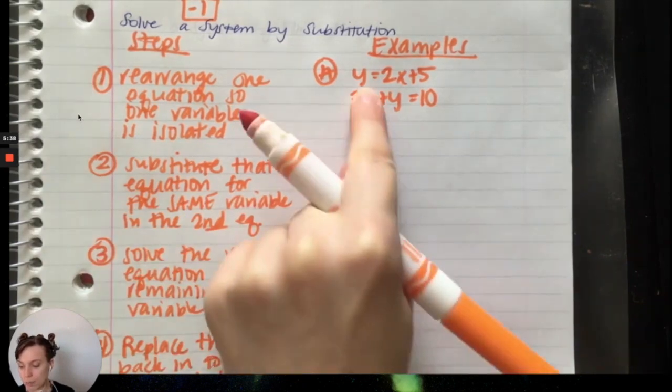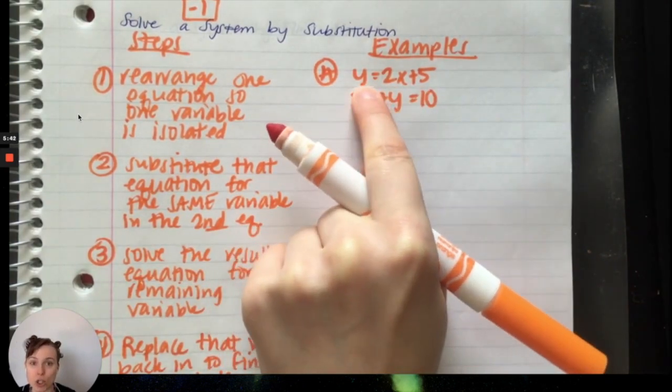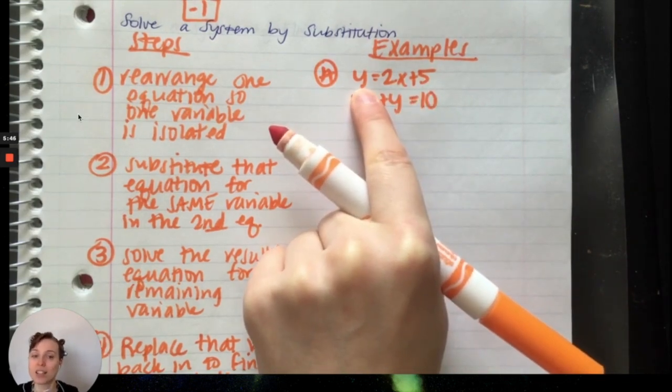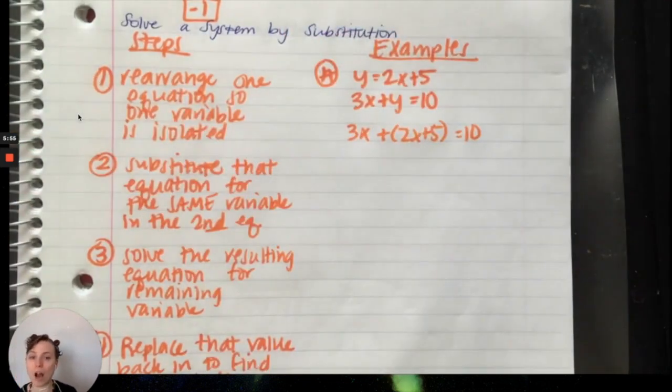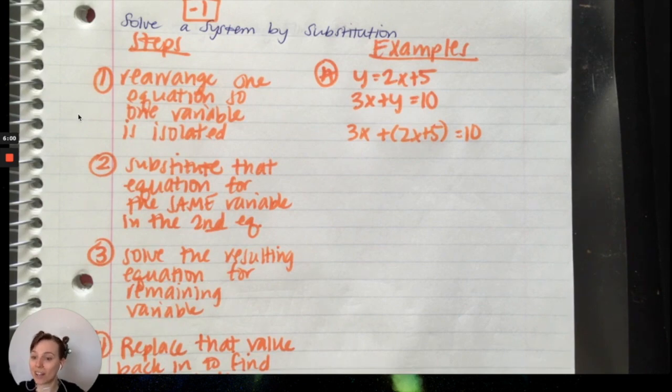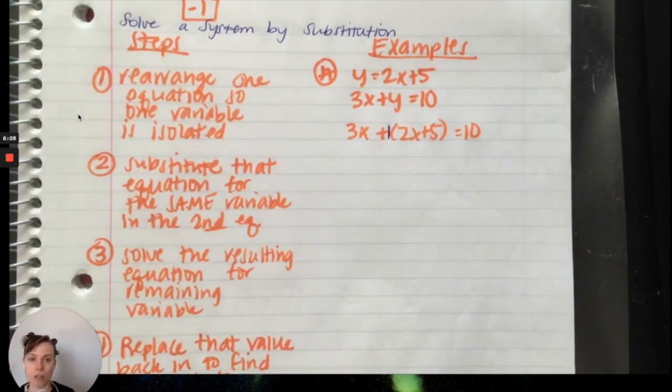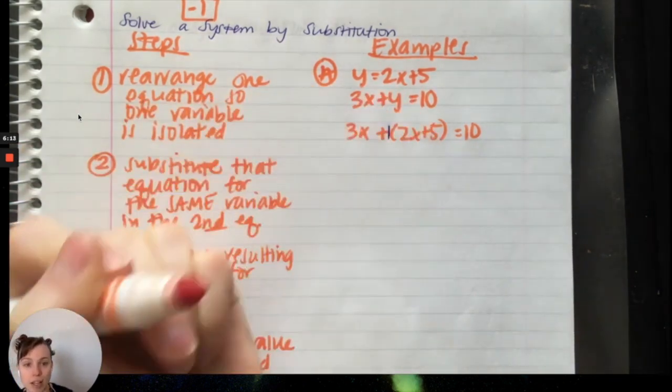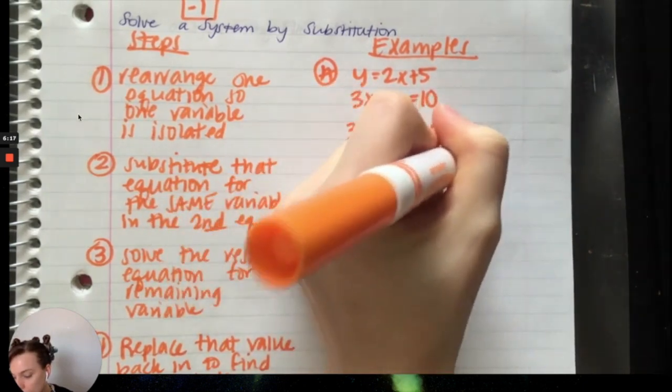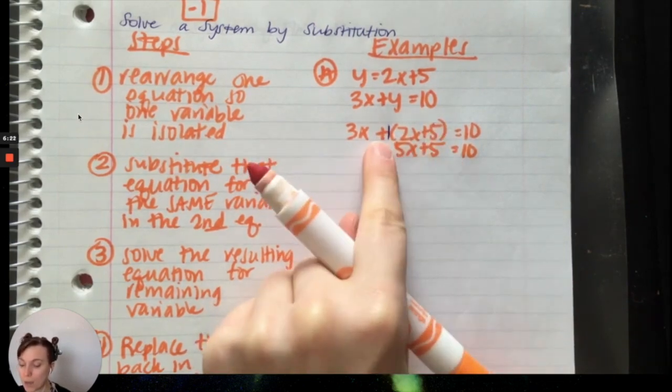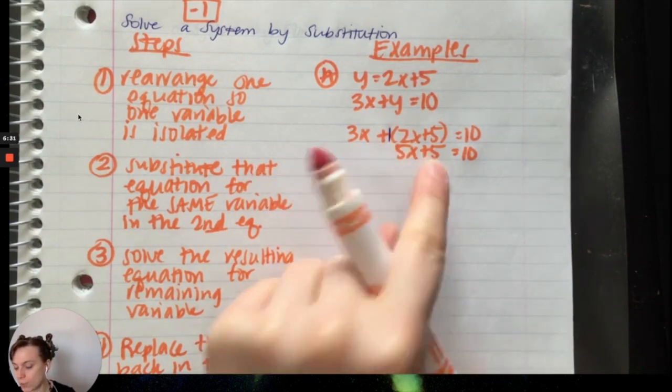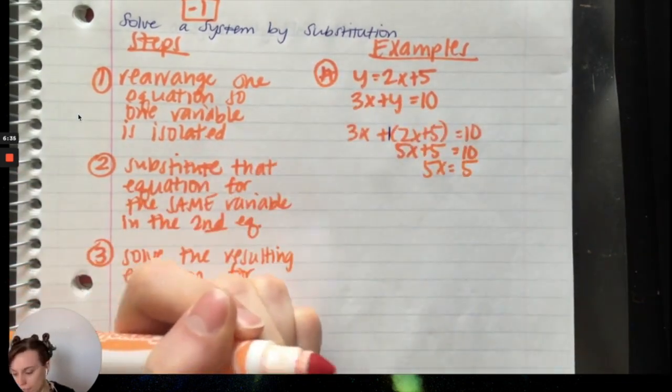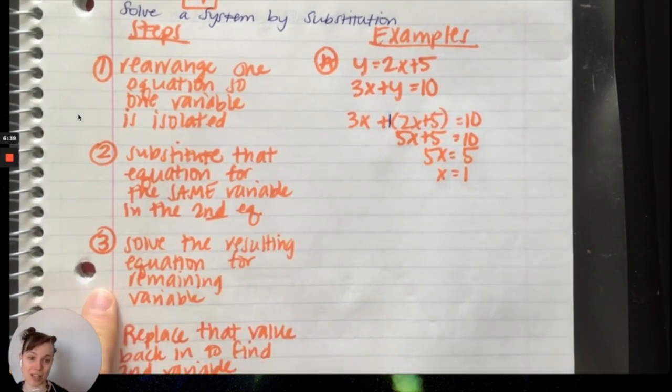I'm now going to substitute that equation because Y equals 2X plus 5. These are two equal things. Y is the exact same thing as saying 2X plus 5. That means I can substitute for that Y and wherever I saw Y I'm now substituting in and replacing it with 2X plus 5. Then I can combine my like terms 3X and 2X so I get 5X plus 5 equals 10. Subtract 5 on both sides so I get 5X equals 5, divide by 5 and X equals 1.